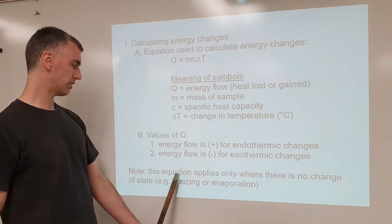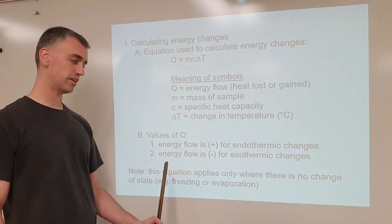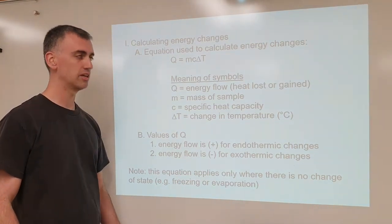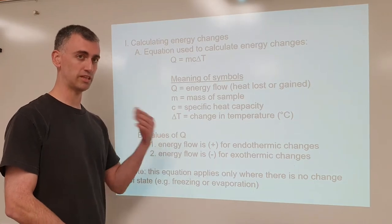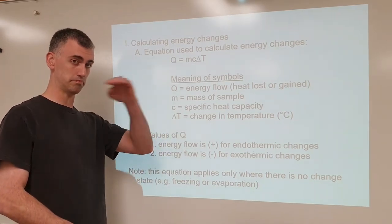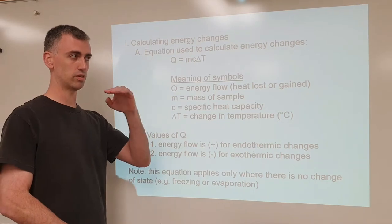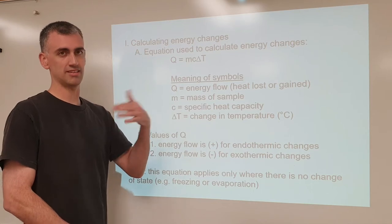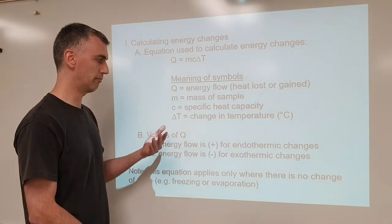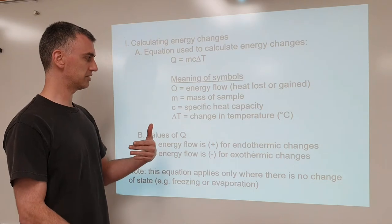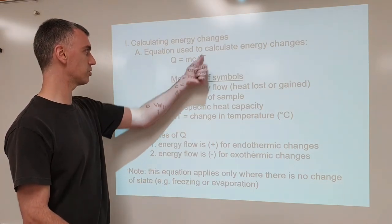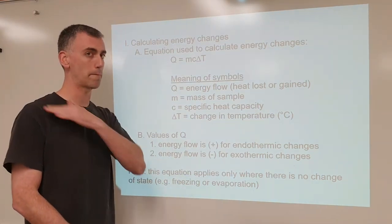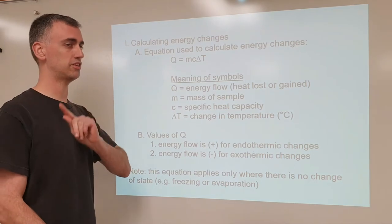The equation only applies when there is no change of state. The reason why is because when the state of the matter is changing — like something melting from solid to liquid or vaporizing from liquid to gas — the temperature stays the same. If you blowtorch boiling water, it's still 100 degrees Celsius until it finishes evaporating. If delta T equals zero, then Q equals zero, and to say it takes zero joules to vaporize water is not a true statement. So this equation does not work when a phase change is happening.